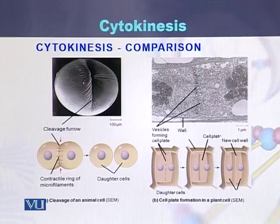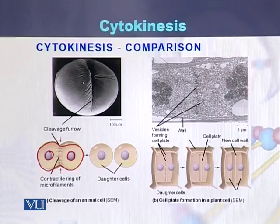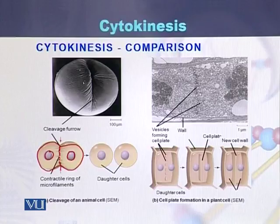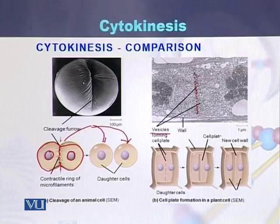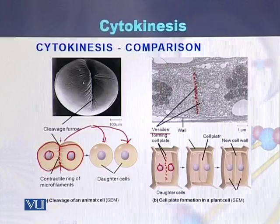Comparing cytokinesis between animal and plant cells: in the animal cell, a single cell with two nuclei has a cleavage furrow between them, and by the contractile ring and the deep furrow of that cleavage, the cell is converted into two cells. In plant cells, vesicles are formed in the middle of the cell, forming a plate that converts a single cell into two daughter cells.